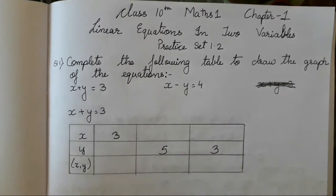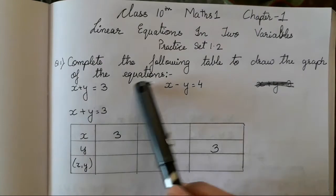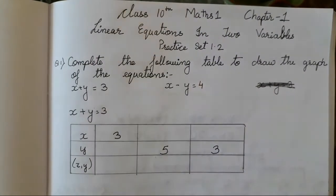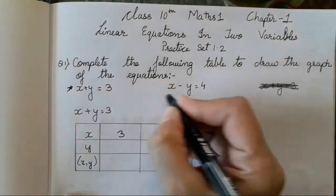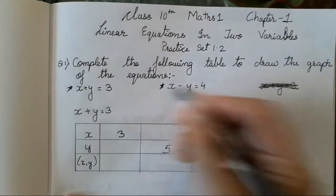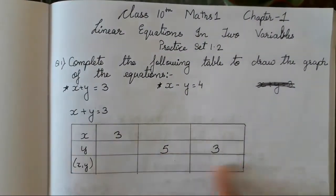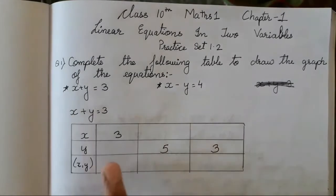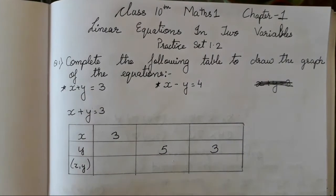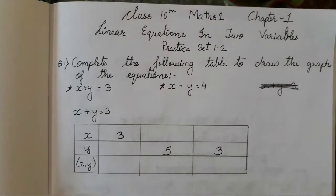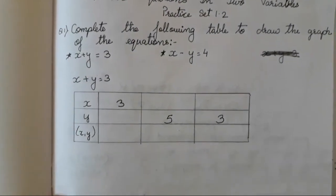So let's start with the first question: complete the following table to draw the graph of the equation. These are the two equations given. For the first equation we have to form a table which has already been given in the textbook — you all have to only fill in the blanks. It's very easy; we have done this last year also.